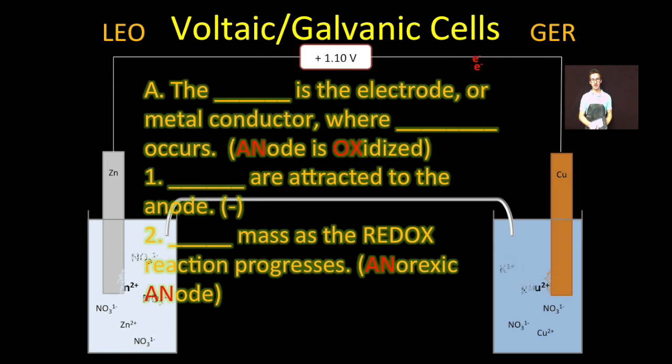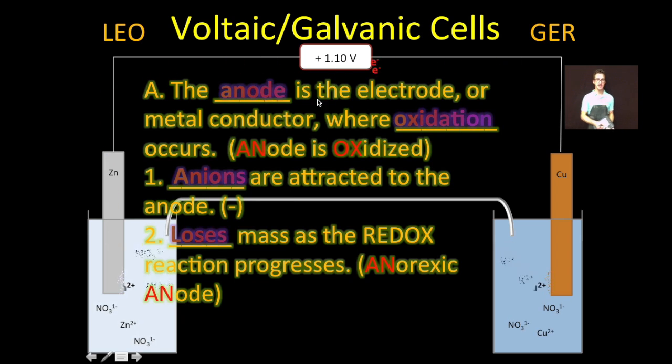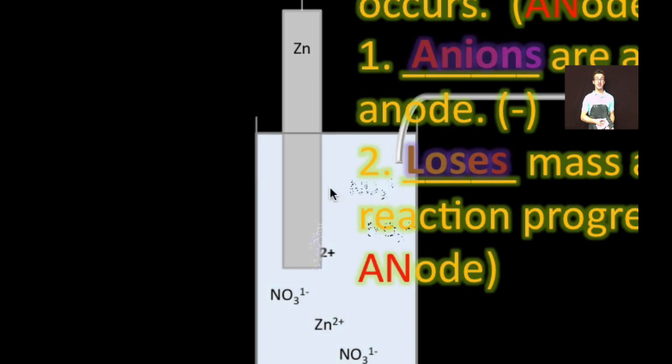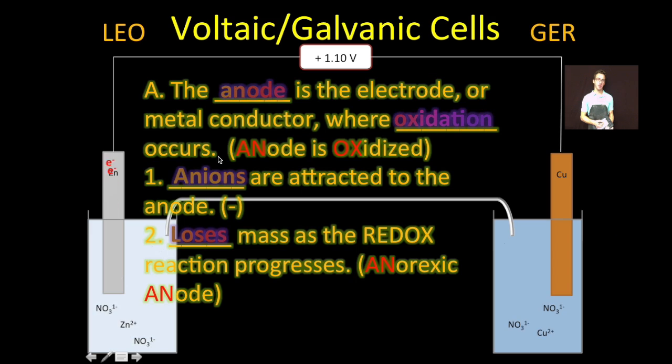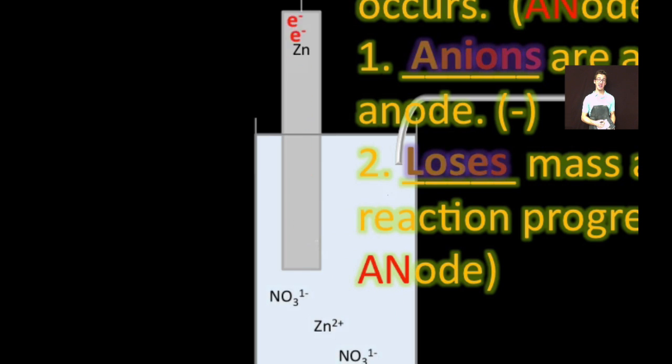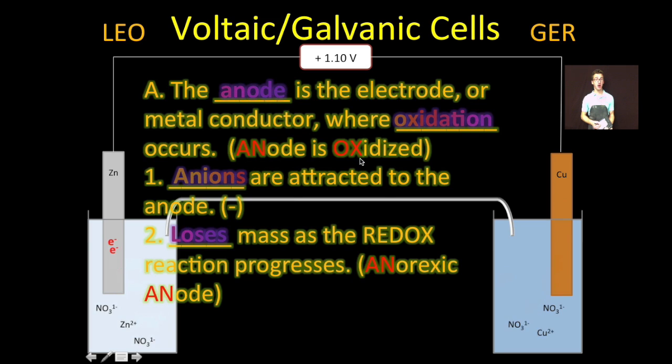Let's break down the different parts of a voltaic cell. The anode is the electrode or metal conductor where oxidation occurs. In the voltaic cell on your screen, the zinc metal is the anode. It is being oxidized to form zinc ion. A couple things to know about the anode. Anions from our salt bridge are attracted to the anode. And as it is oxidized, it loses mass. Again, that solid zinc is being oxidized into zinc ion and sort of plopping into solution.